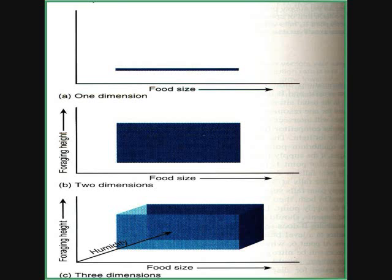We have an example with a California gnatcatcher comparing height above the ground with prey length — prey length is pretty much food size because a longer insect is bigger food. It's highly endangered and its habitat is being destroyed. We can see that you find the most nesting pairs with a food length of four millimeters and a height above the ground of three to six meters. So you would do well to conserve a habitat three to six meters above the ground with food that is four millimeters long. Taking into account the realized niche of the California gnatcatcher, defined by these two dimensions, we would be able to better help conserve the species and save them from extinction.